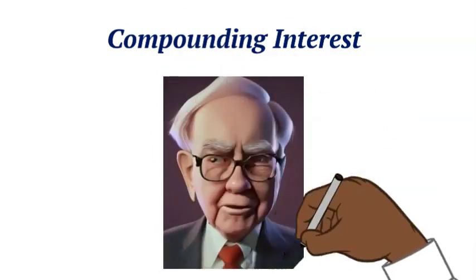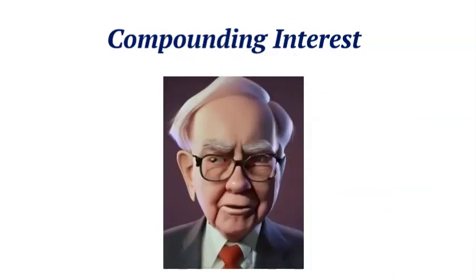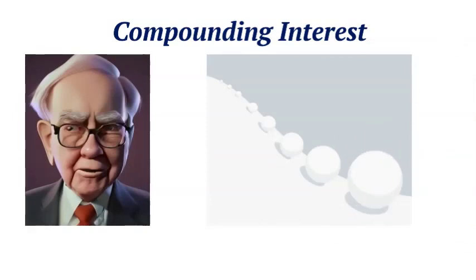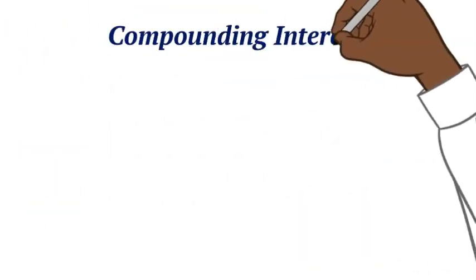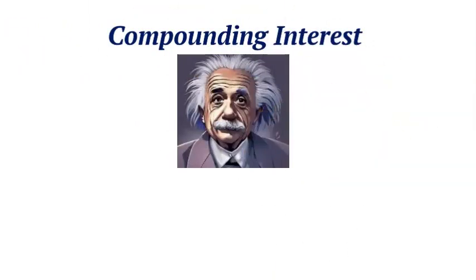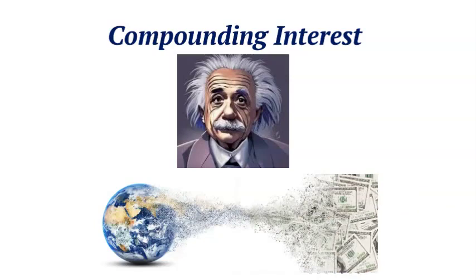Warren Buffett, considered by most as the most successful investor of the 20th and 21st century, describes the power of compounding interest as building a little snowball and rolling it down a very long hill. Albert Einstein said compounding interest is the eighth wonder of the world.